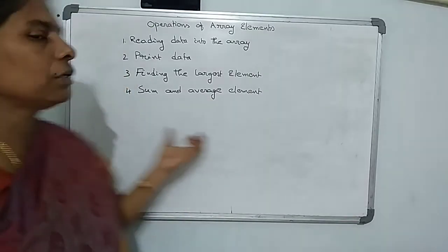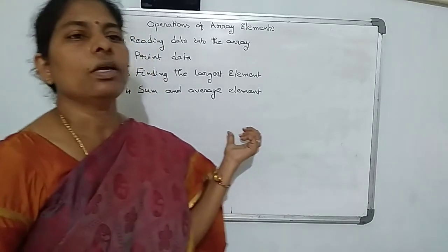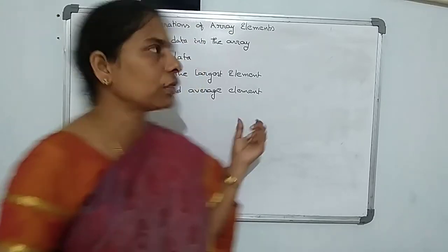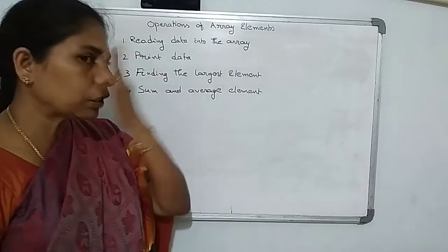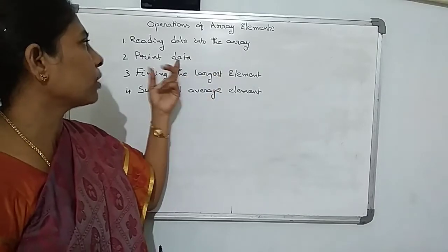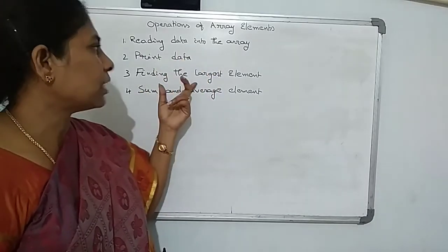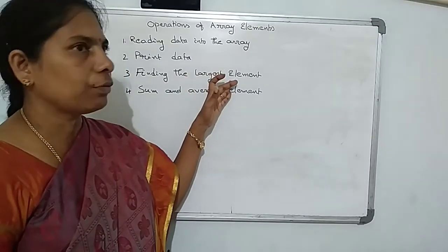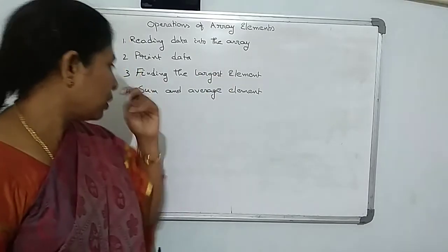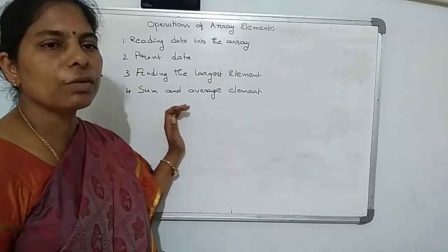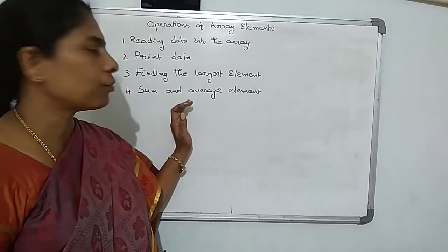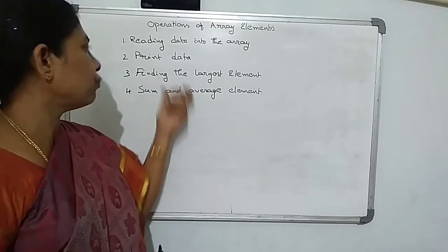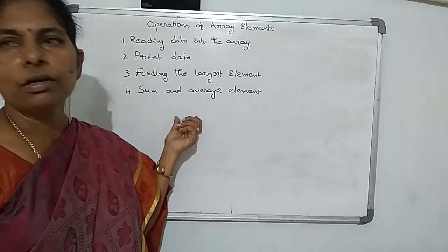Within the given elements, we find the sum and average. These are the four operations: reading elements into the array, printing elements, finding the largest element by comparing one element with another, and finding the sum and average — first calculating the sum by adding elements one after the other, then computing the average.